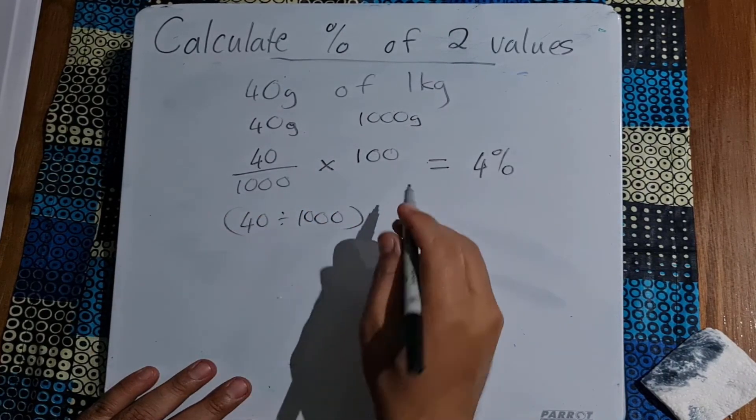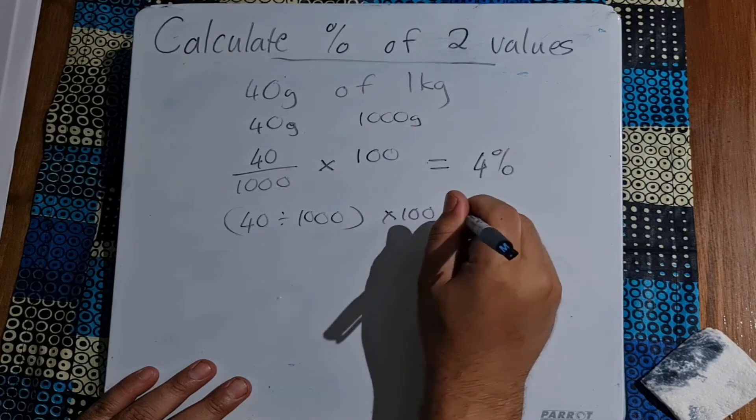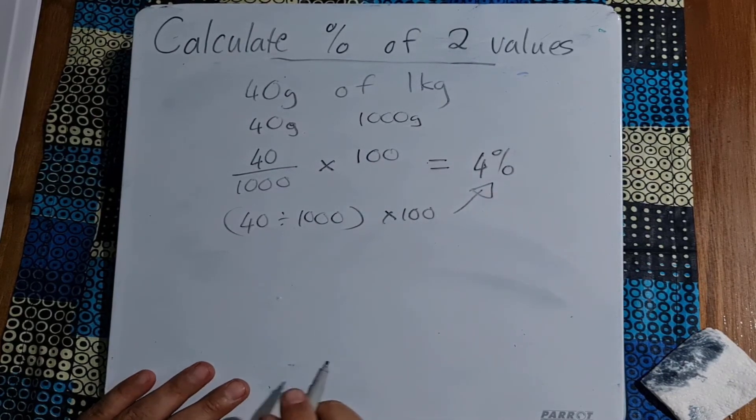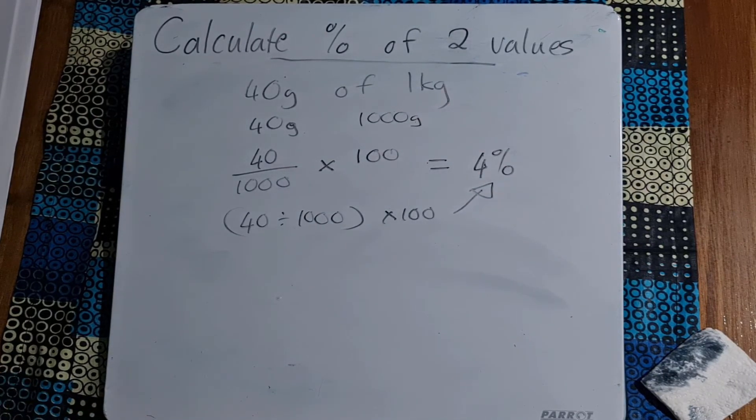You can see just a slight difference when it comes to the grade 11s, that sometimes the two values that you are given are in different units of measurement. So please get them to the same unit of measurement first, and then you can multiply by 100 and you'll get your answer.